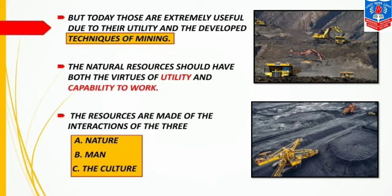The natural resources available to us should possess both the virtues of utility and capability to work — that is, they should be useful and should have the capability to work. The last point is resources are made from the interactions of three things: nature, man, and culture. When all three things interact with each other, resources are made.